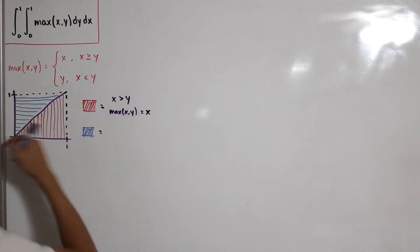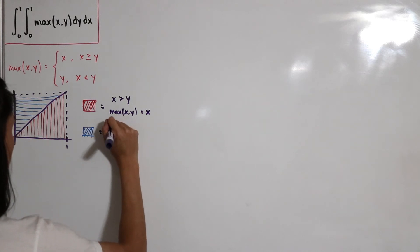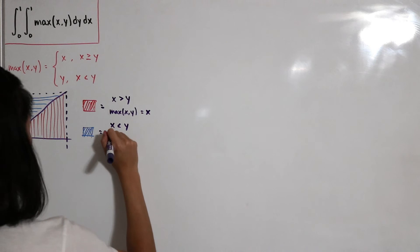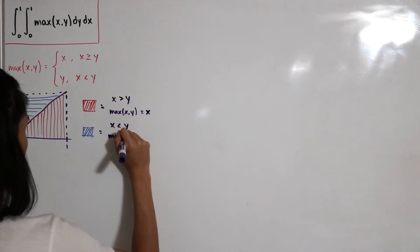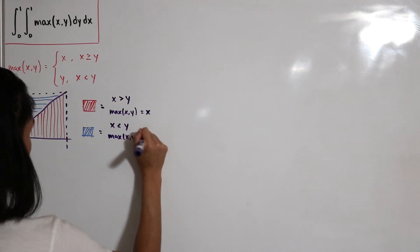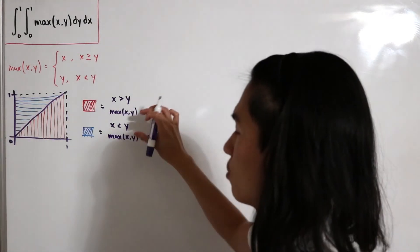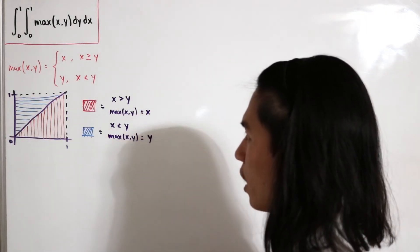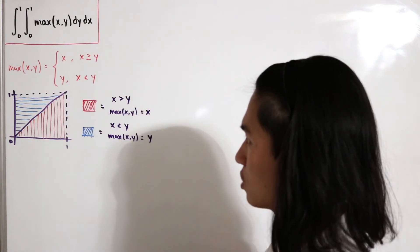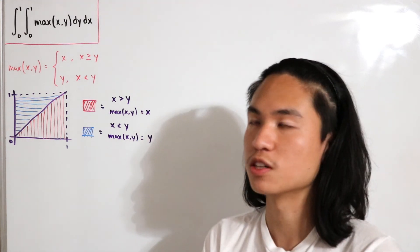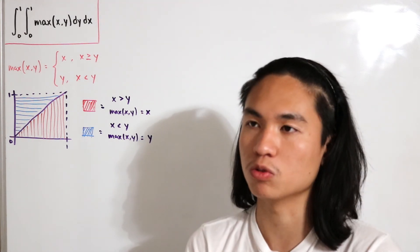For the blue, if x is less than y, so y is bigger, then the max of x, y is equal to y. That would mean we have two different values. If we're trying to calculate the double integral, we would have to calculate two different integrals and add those integrals up together.